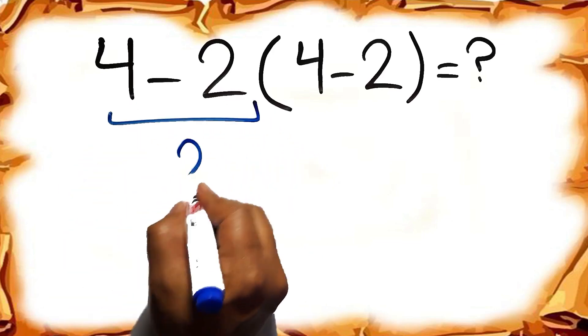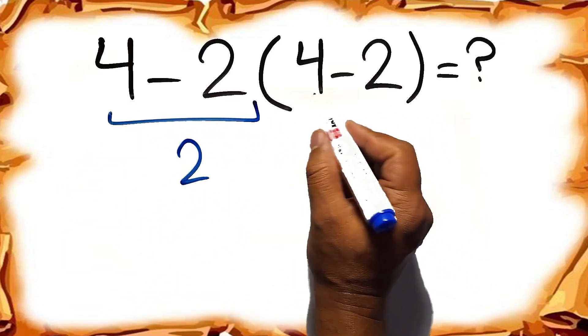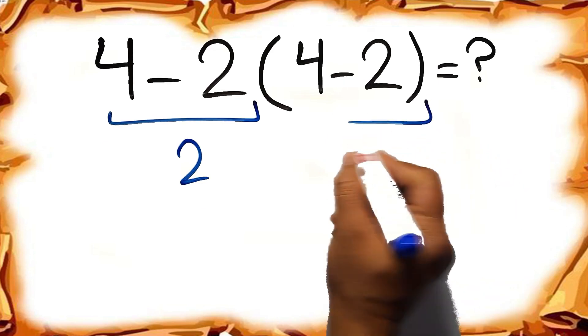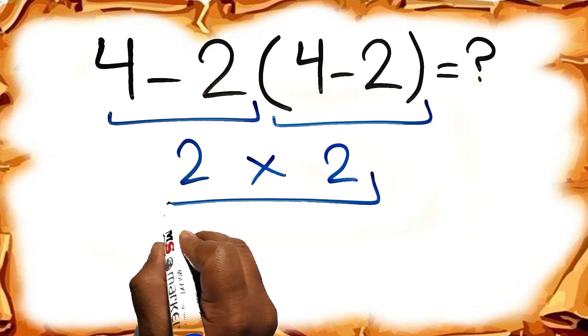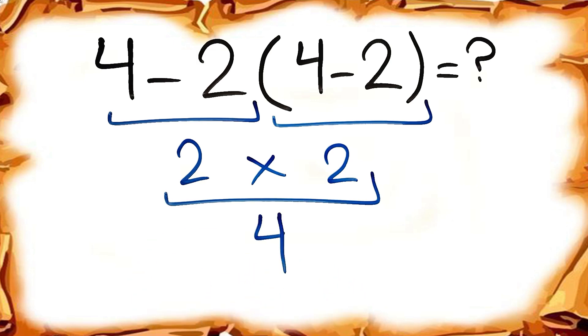4 minus 2 gives us 2. And again here inside this parentheses we have 4 minus 2. So 2 times 2, which equals 4. But this answer is not correct.